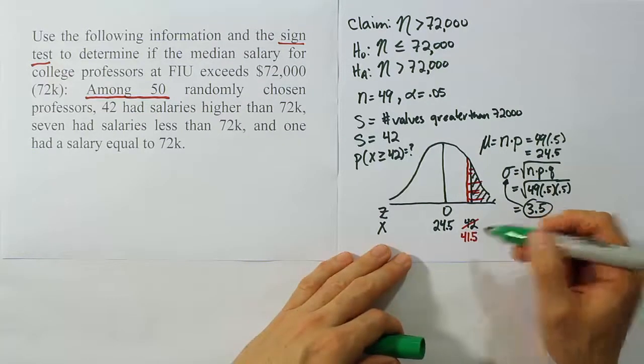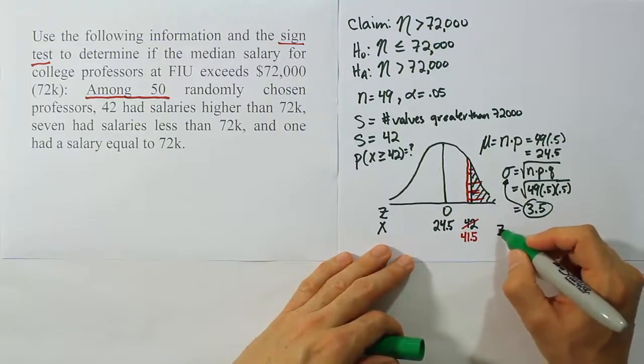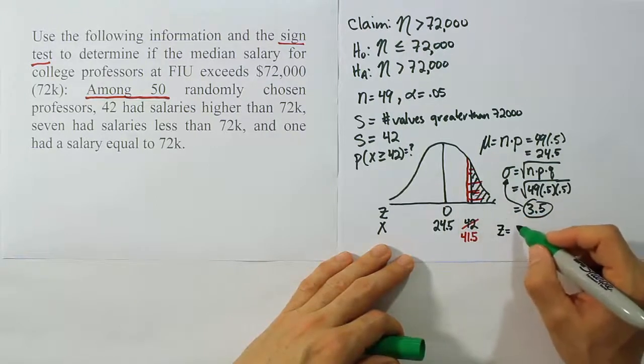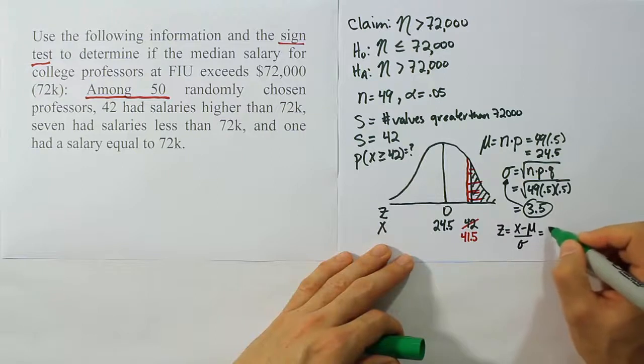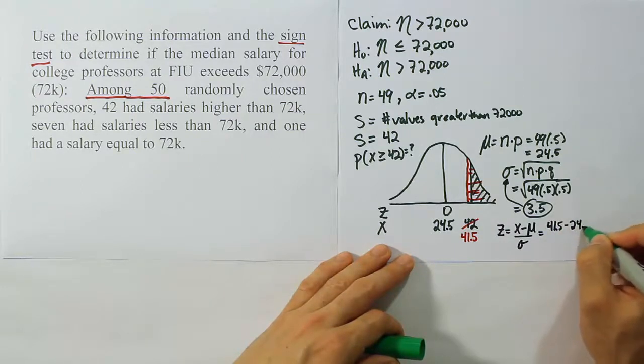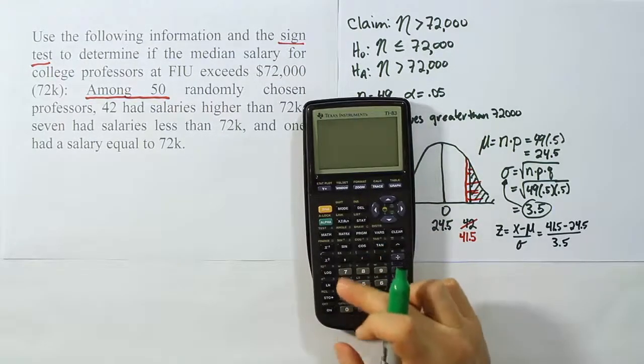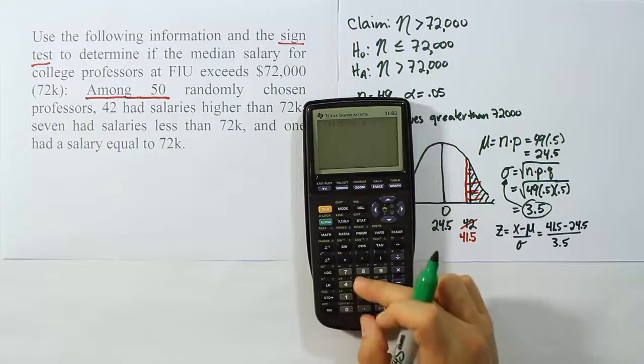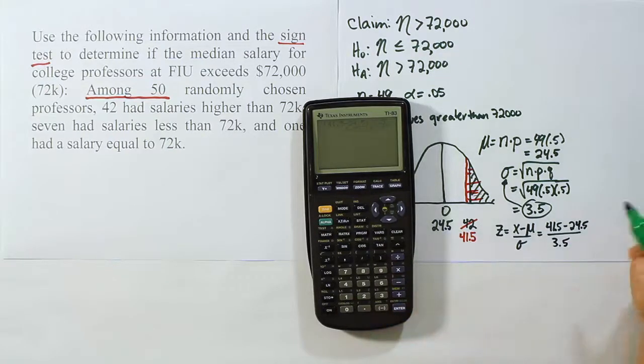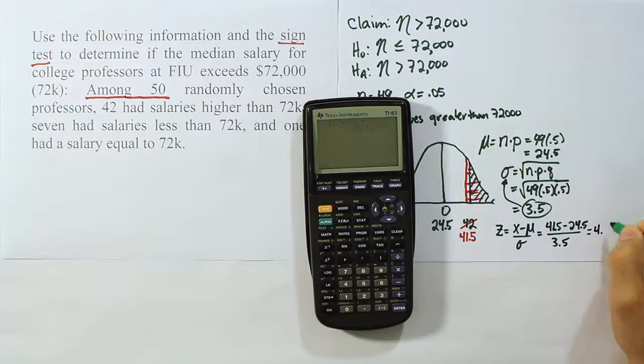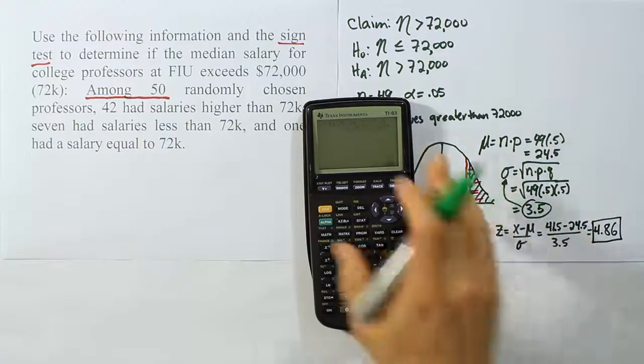So once we use 41.5, the rest is pretty straightforward. We're going to use the Z formula to convert that into a Z score. So we have X minus the mean over sigma. X here is 41.5 minus the mean of 24.5 over sigma, which we said was 3.5. Let's see what that gives us as an answer for the Z score. We're going to have 41.5 minus 24.5, close up the brackets and divide by 3.5. When we do that, we get 4.857. So let's call it 4.86 just to round off to two places. 4.86.